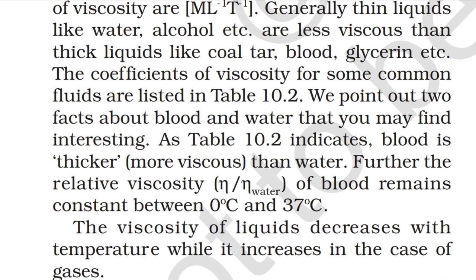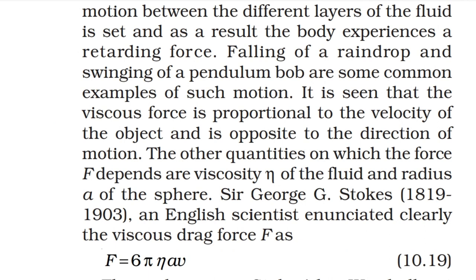Generally, thin liquids like water and alcohol are less viscous than thick liquids like coal tar, blood, and glycerine. The viscosity of liquids decreases with temperature while it increases in the case of gases. Blood is more viscous than water, and the relative viscosity η/η_water of blood remains constant between 0°C and 37°C.